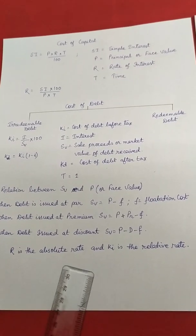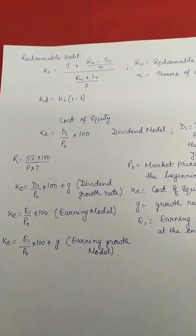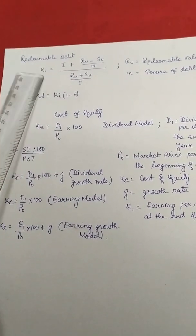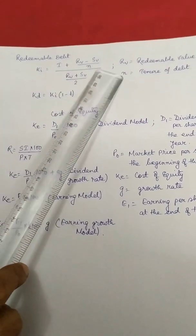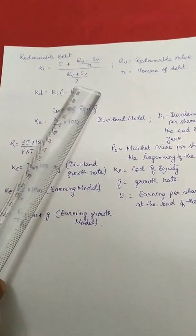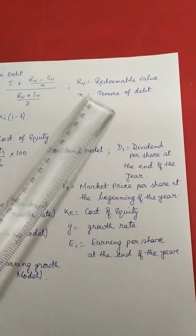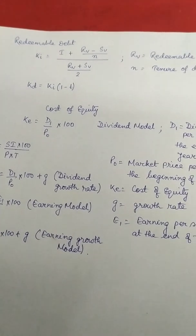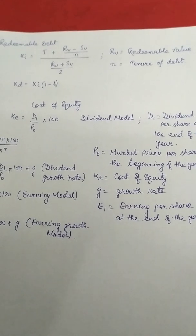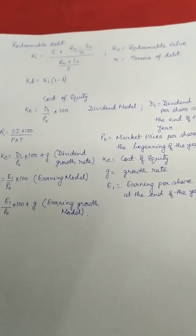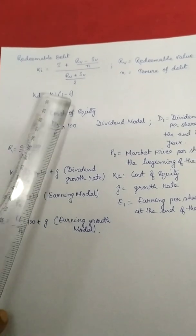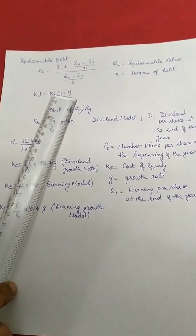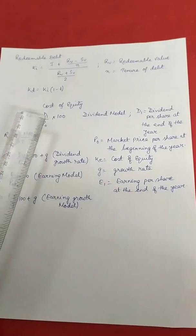R is the absolute rate and Ki is the relative rate. Coming to cost of redeemable debt: Ki = [I + (RV − SV) / N] / [(RV + SV) / 2], where RV is the redemption value and N is the tenure of debt. The difference between redemption value and proceeds is adjusted per year with annual interest. The numerator gives annual interest payment and the denominator gives average debt in the business.